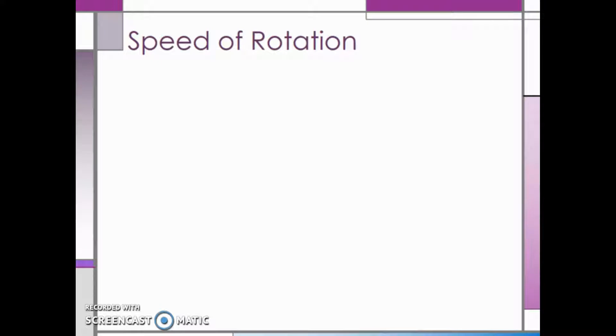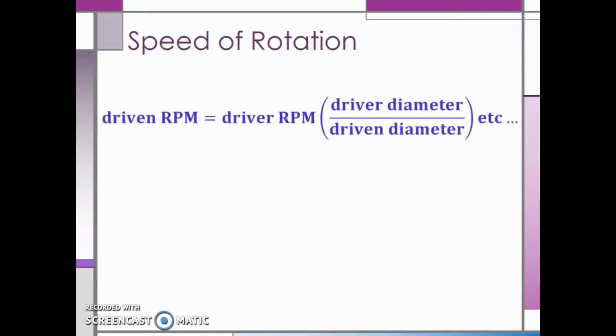Finding the speed of rotation is very similar to the speed of rotation with gears. The only difference is now we will be using the pulley diameter instead of the number of teeth on the gear. This means that our driven RPM is equal to the driver RPM multiplied by the ratio of the driver diameter over driven diameter.